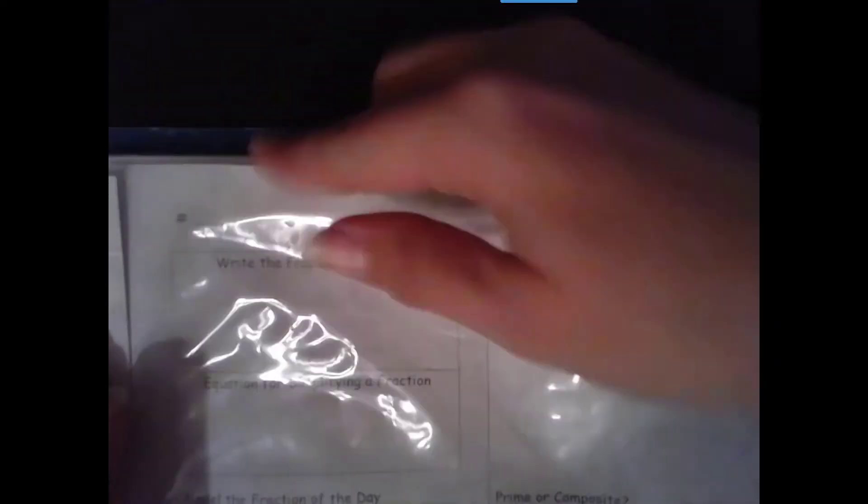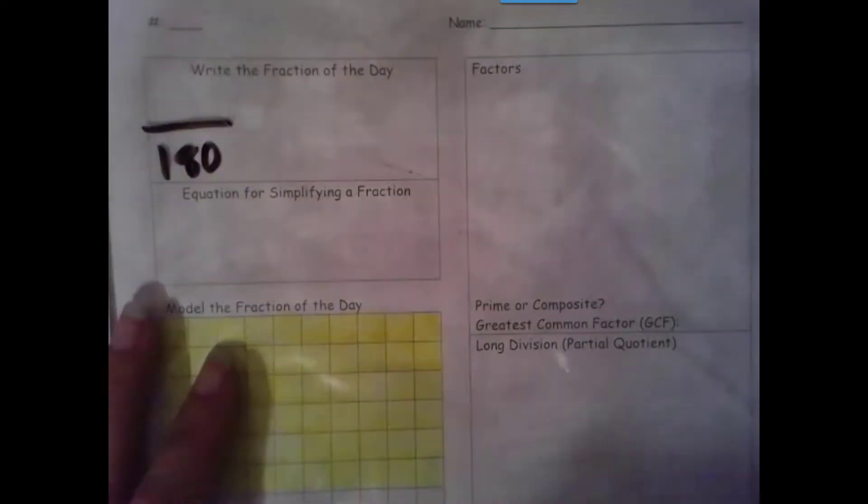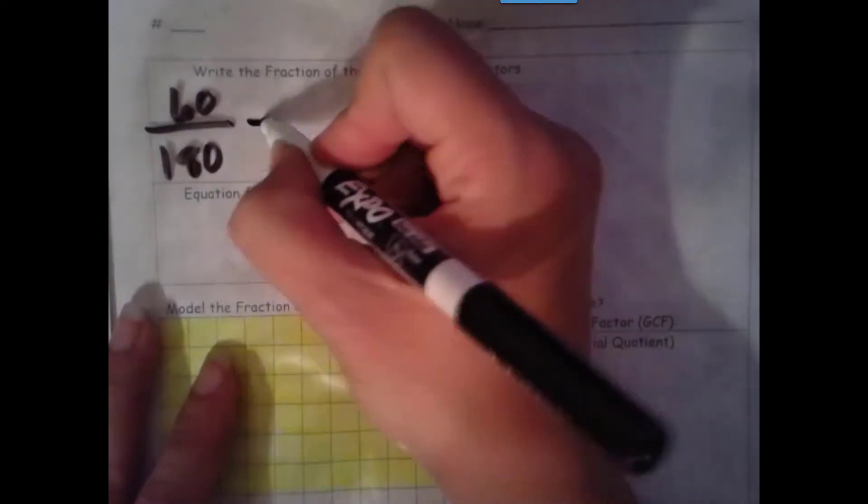Welcome to day 60 of our school year. So let's get down our beginning fraction. We have a total of 180 days, and we are on day 60.